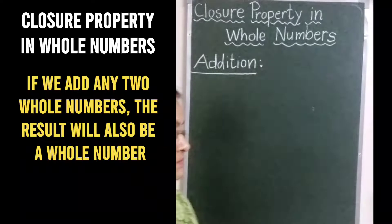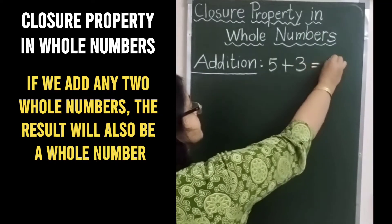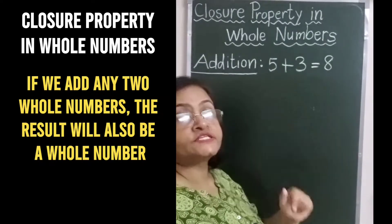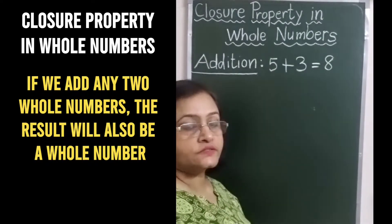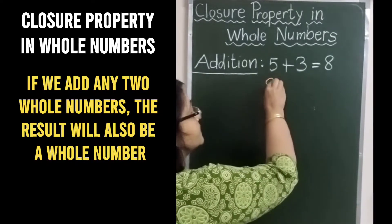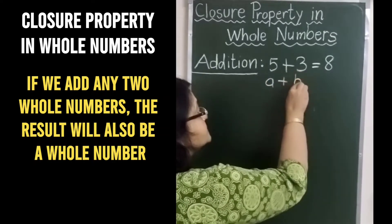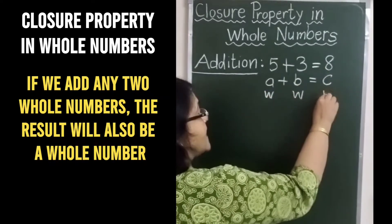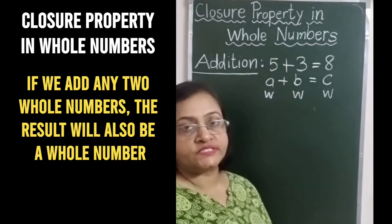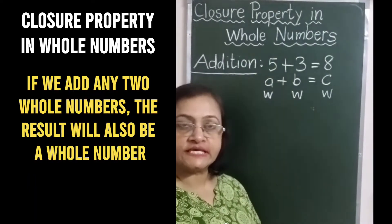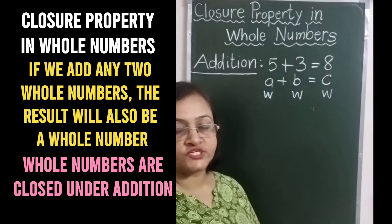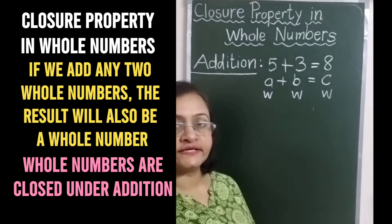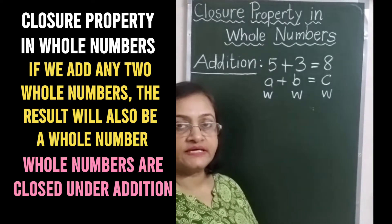For example, 5 plus 3 is 8. 5, 3, and 8 are all whole numbers. That means a plus b is equal to c, where a, b, and c are all whole numbers. So we can say whole numbers are closed under addition. Addition में whole numbers close हो जाते हैं — whole numbers को add करने पर result में भी हमें whole number ही मिलता है.